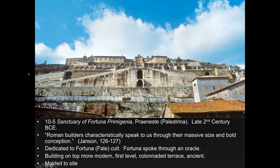Getting into the structures: this is the Sanctuary of Fortuna Primigenia in Palestrina, from the late second century BCE — during the Roman Republic, but during a brief period when it was taken over by an autocrat. Roman builders really speak to us through their massive size and bold conception. In this picture, everything below a certain line is the ancient structure, and the things above are more modern structures that try to copy what the ancient structure looked like.